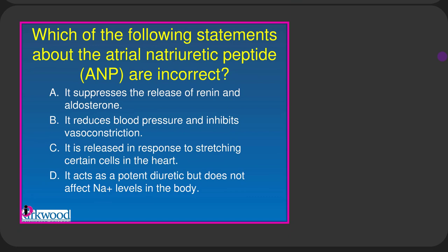Regarding a quiz question on ANP: ANP does suppress the release of renin, reduces blood pressure, and inhibits vasoconstriction. It is released in response to stretching. It definitely affects sodium levels because when ANP inhibits angiotensin 2, it inhibits aldosterone, which inhibits sodium reuptake.